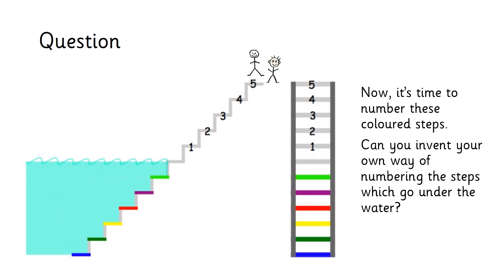Can you invent your own way of numbering the steps which go underwater? Can you label the green, purple, red, yellow, dark green and blue steps with your own system? I'm looking forward to finding out what you've decided to do. Thank you.